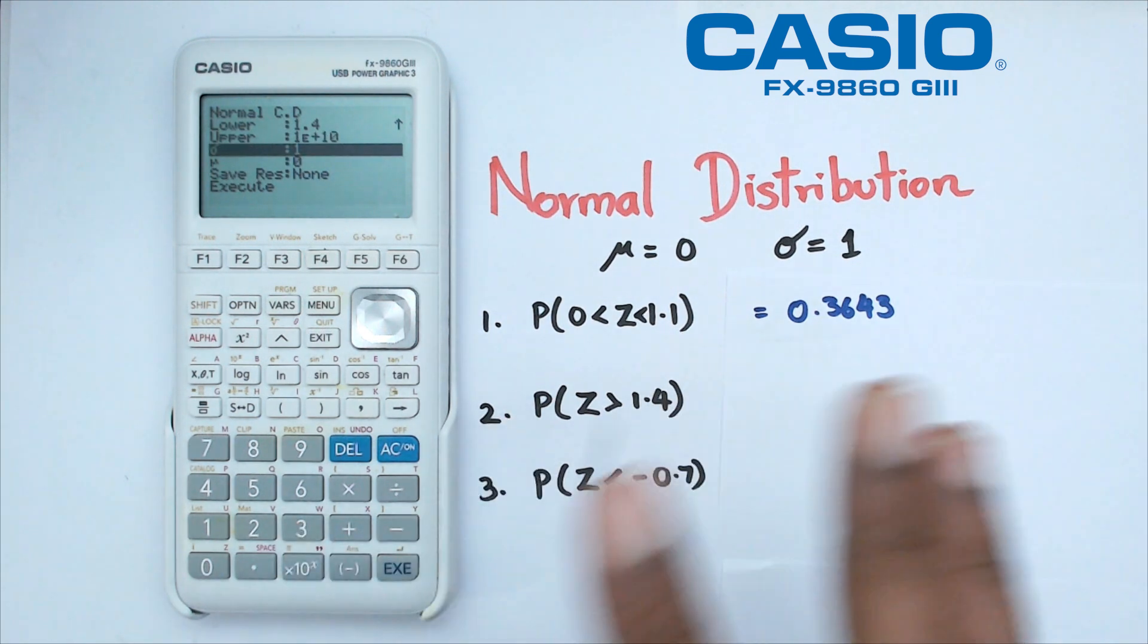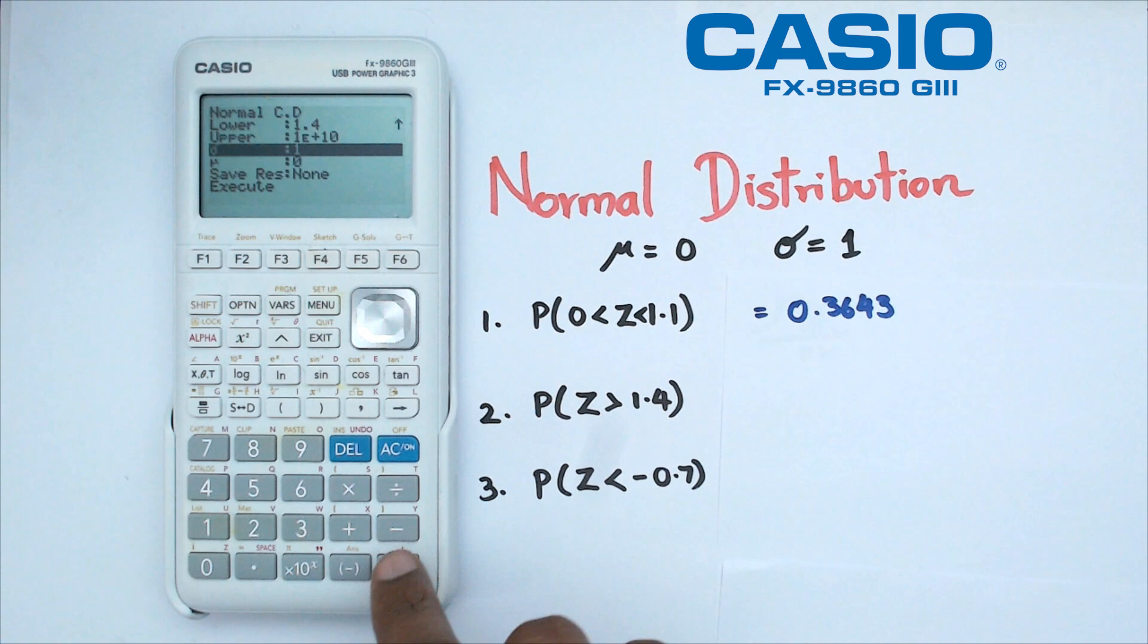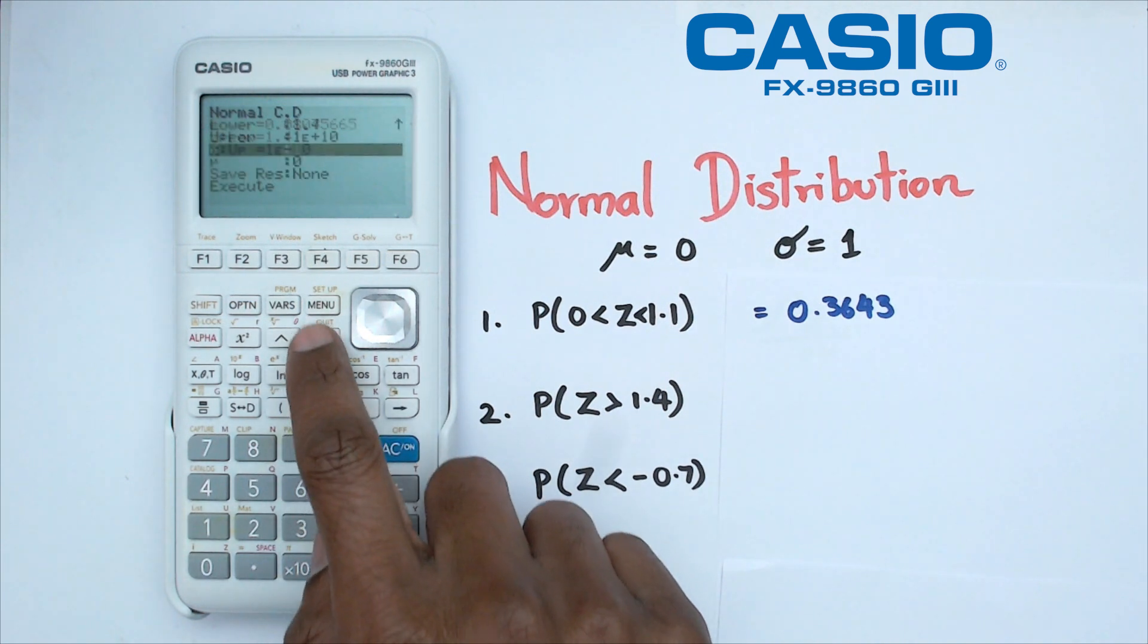That's going to give you a very large number and of course we can leave it like that and we're going to click on execute and we've got this as the probability which is 0.08 but I just want to double check that.